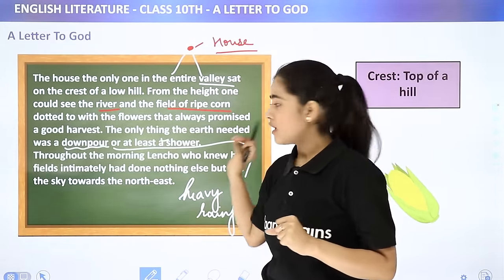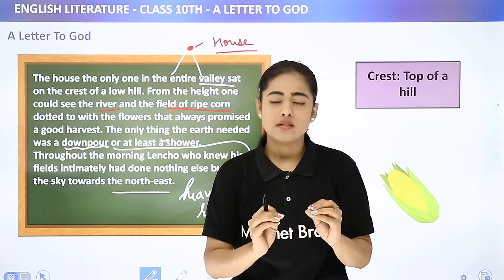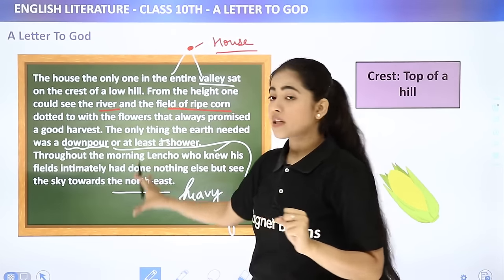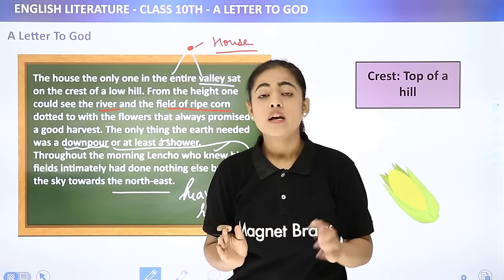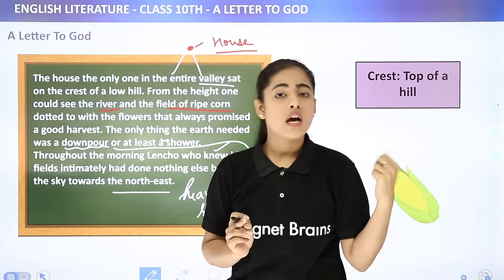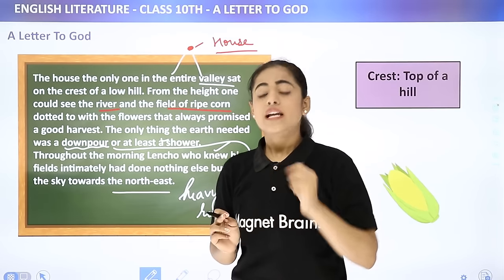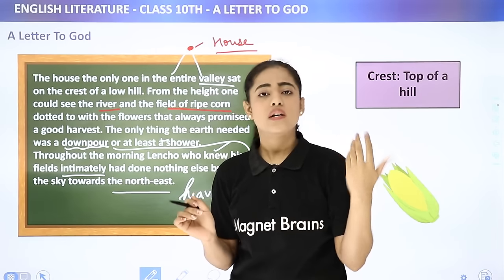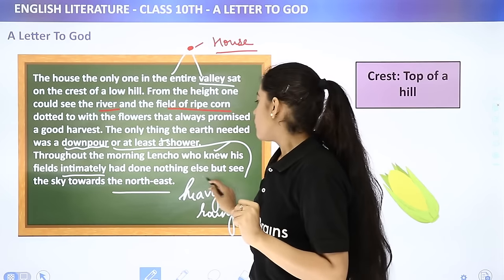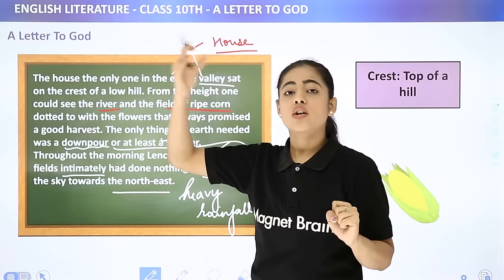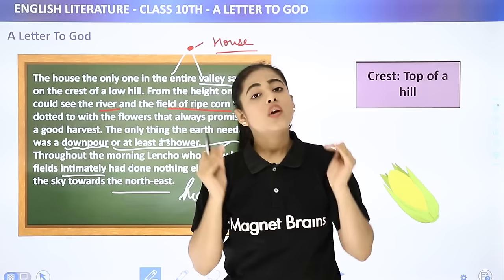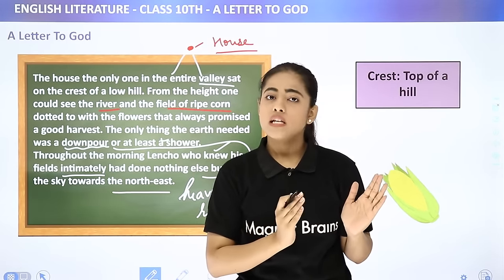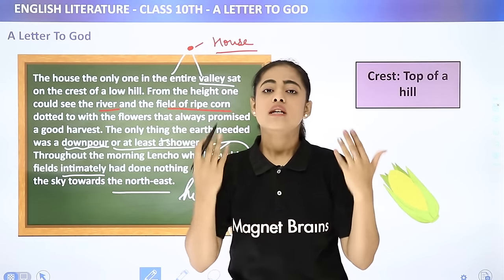Throughout the morning, Lencho — who knew his fields intimately — had done nothing else but watch the sky towards the northeast. Obviously, a farmer knows his field best. A farmer can predict how long farming will take, what the harvest will be, and whether there will be profit or loss. So Lencho, knowing his field closely, was watching the sky all morning, hoping the field's need for water would be fulfilled and a good harvest could be seen again.